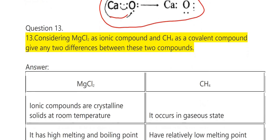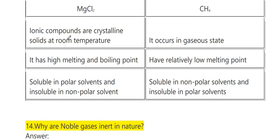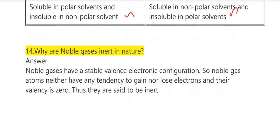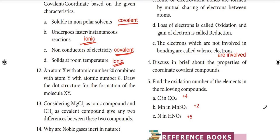Thirteenth question: considering MgCl2 as ionic compound and CH4 as covalent compound, give two differences. MgCl2: ionic compounds are crystalline solids at room temperature with high boiling and melting points, soluble in polar solvents and insoluble in non-polar solvents. CH4: occurs in gaseous state, relatively low melting point, soluble in non-polar solvents and insoluble in polar solvents. Fourteenth: why are noble gases inert? Noble gases have stable valence electronic configuration; their atoms neither gain nor lose electrons and their valency is zero, thus they are inert.